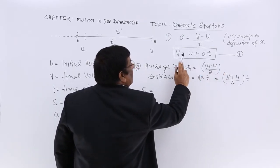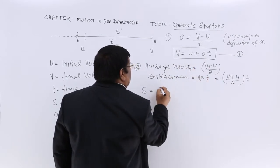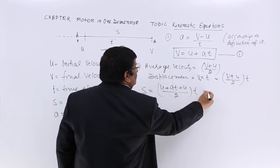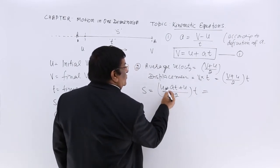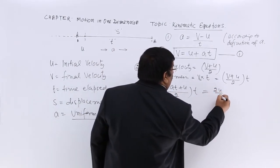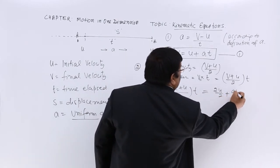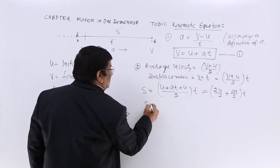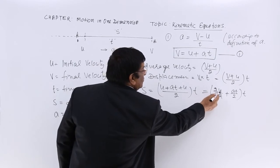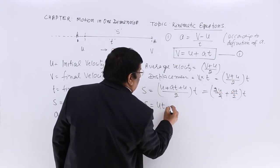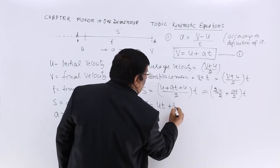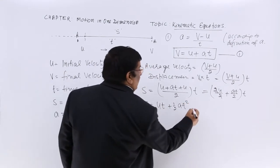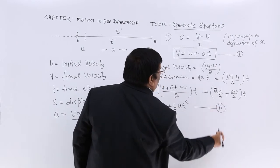This V, with the help of the first formula, we write as U plus AT. So substituting: S equals (U plus AT plus U) upon 2, multiplied by T. This gives S equals (2U plus AT) upon 2, multiplied by T, which simplifies to S equals UT plus half AT squared. This becomes our kinematic equation number 2.